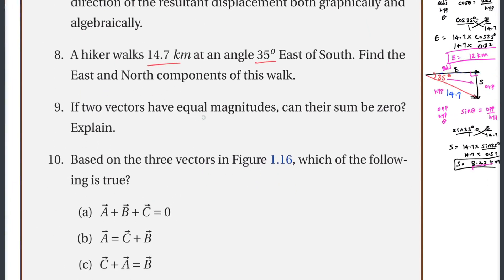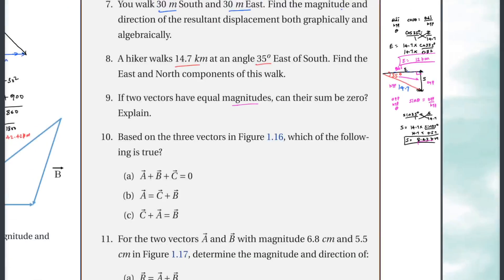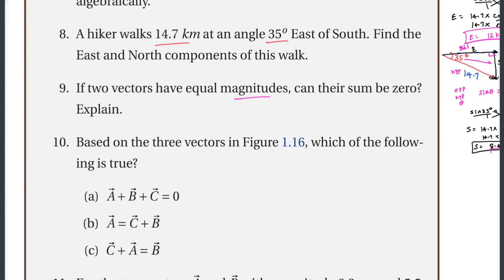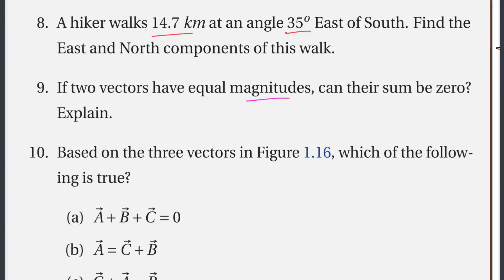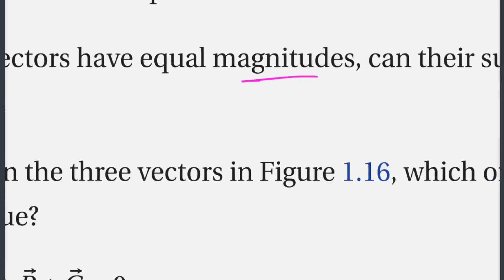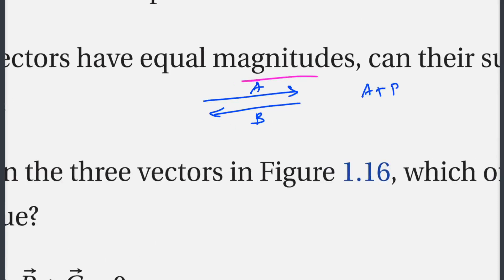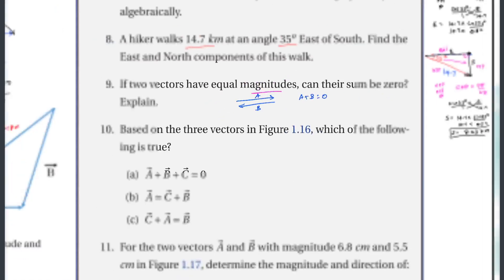If two vectors A and B have equal magnitudes, they can sum to zero. If vector A and vector B have equal magnitudes but opposite directions, then A plus B equals zero.